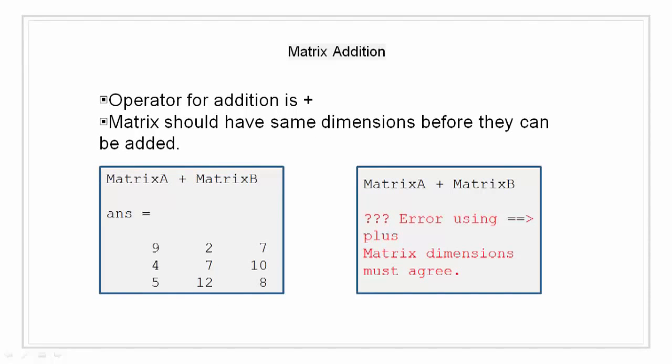Matrix addition. The addition operation for matrix is similar to that of adding numbers, with only exception that for purpose of addition, the dimension of the participating matrix must match. For example, on left we have a matrix A, a Pascal matrix with dimension 3 and matrix B, a magic matrix with dimension 3.